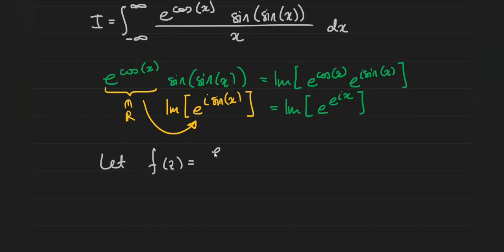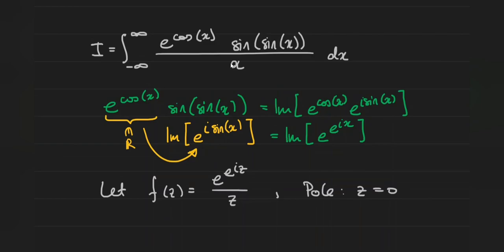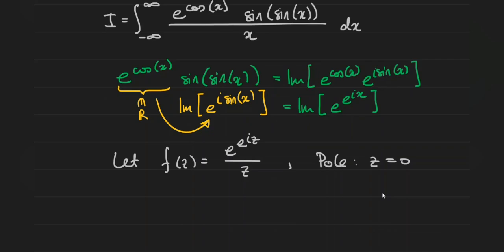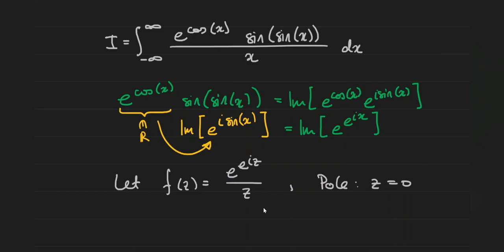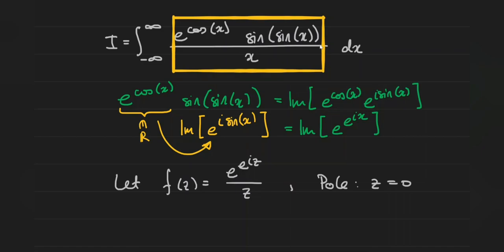That motivates us to use the following function to integrate. We're going to let f of z be equal to e to the e to the i times z, divided by z — so we're just replacing all the x's with z's. Notice there's going to be a pole at z equals zero, which we might want to avoid. It's worth mentioning that in the original function, x equals zero is a removable singularity, but when we transition to the complex plane it becomes a non-removable singularity — in particular a simple pole. After we integrate, we're going to take the imaginary part of everything, because the imaginary part of this function is exactly the integrand we started with.